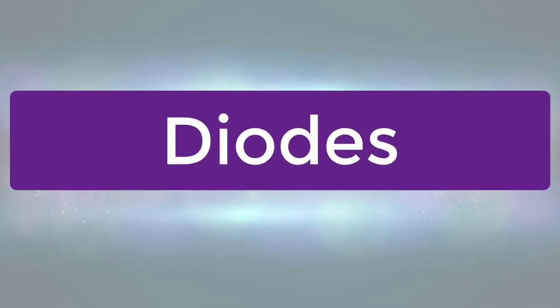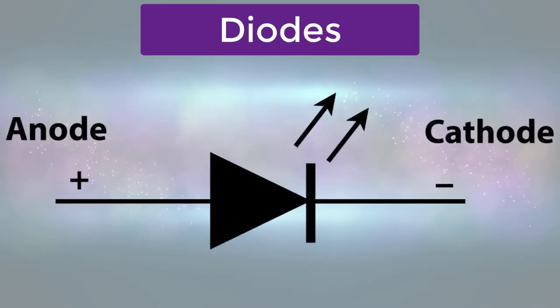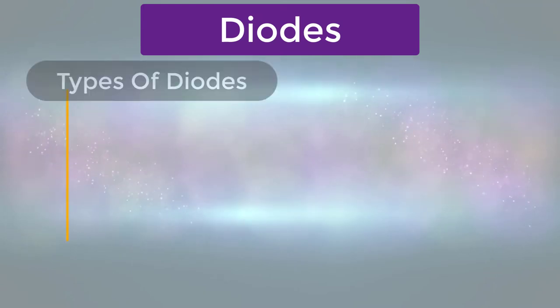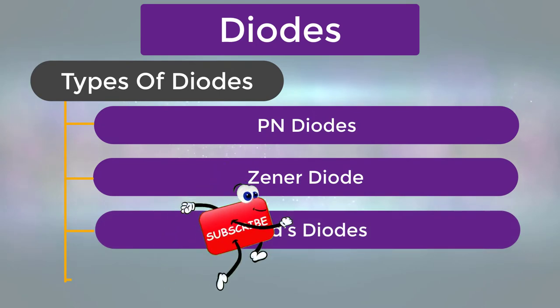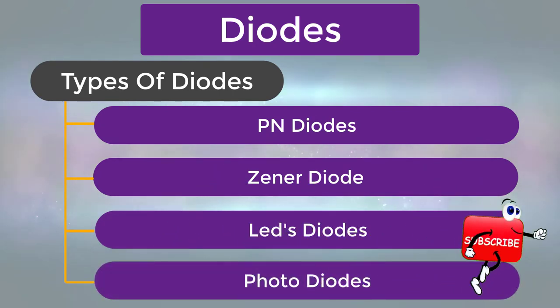Diodes. A diode is a device that allows current to flow in one direction and is usually made with semiconductor material. It has two terminals: anode and cathode terminals. These are mostly used in converting circuits like AC to DC. These are of different types like PN diodes, Zener diodes, LEDs, photodiodes, etc.